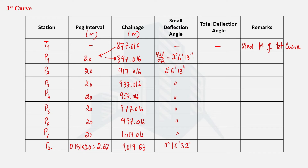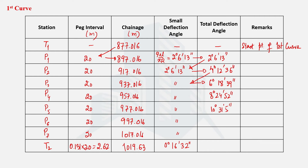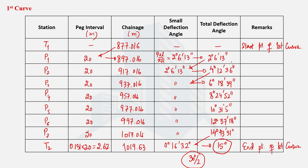For the total deflection angle, at P1 it remains the same as the small deflection angle. For each subsequent point, the previous total deflection angle is added to the small deflection angle, giving cumulative values: 4° 12' 36'' at P2, 6° 18' 39'' at P3, and so on. For the last point the peg interval changes to 2.62m, and adding its small deflection angle gives exactly 15°, which is half of the 30° deflection angle of the first curve. This confirms our calculations are correct, and this point is the end of the first curve.